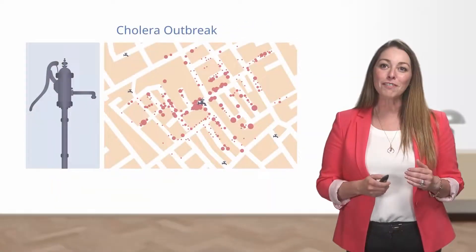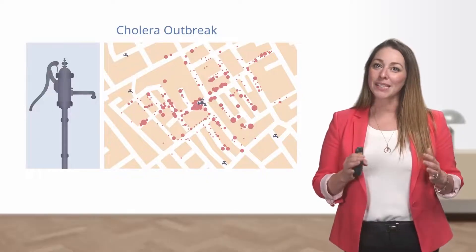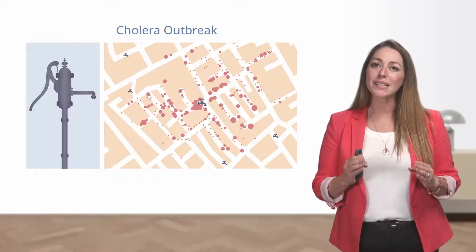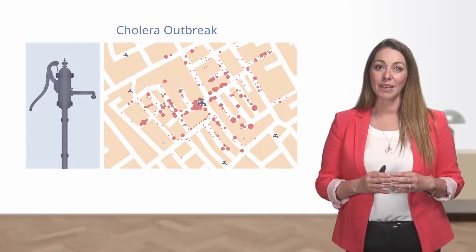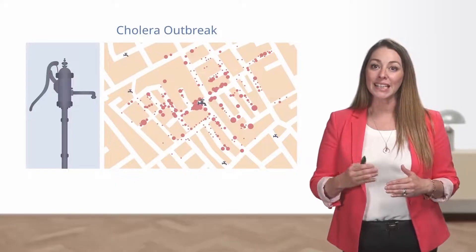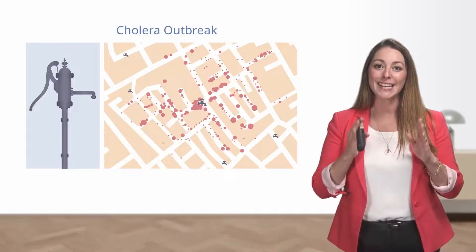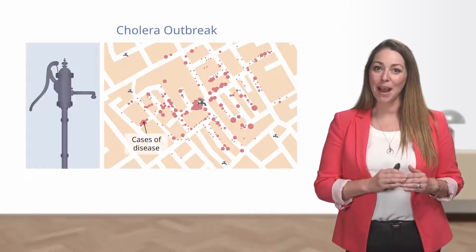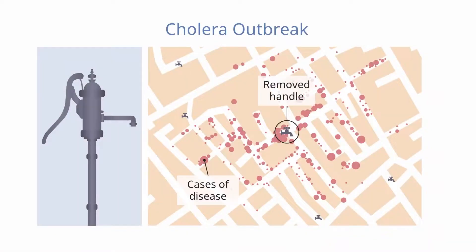This image depicts the infamous cholera outbreak of the 1850s in London, which killed more than 600 people. At the time, germ theory was not widely accepted and we didn't know why people were suddenly getting sick. John Snow was credited with determining the source — contaminated water. He mapped out cases of disease to pinpoint the source, removed the handle of the Broad Street pump, and the epidemic ended. This is one of the first documented cases of indirect transmission of waterborne illness.